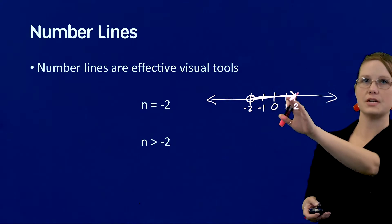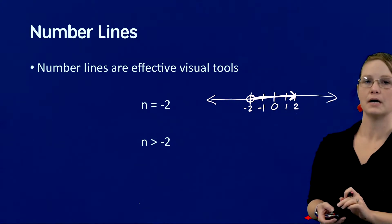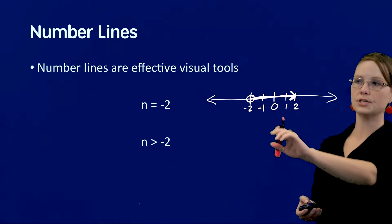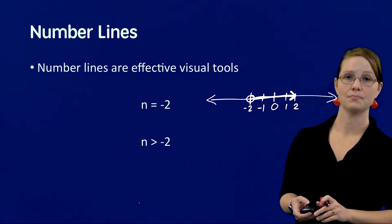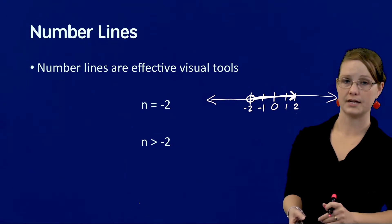Sometimes you can use another color that might be helpful. But it's also important to note here that I used an open circle because the number has to be greater than negative 2. Therefore, it cannot include negative 2.